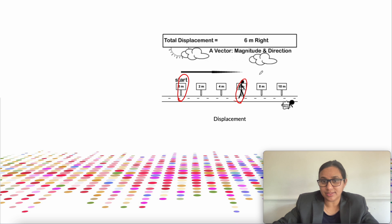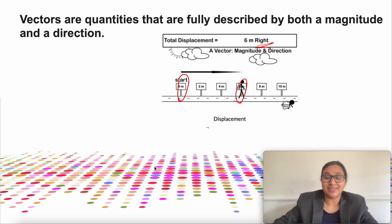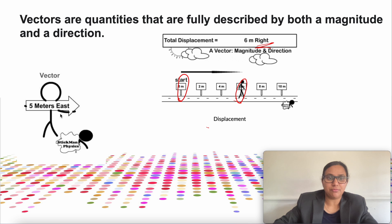But in which direction has he moved? From 0 meter to 6 meter — that is to the right. We measured the displacement as 6 meter to the right. So here 6 meter indicates the magnitude and 'right' indicates the direction. As you can see here, '5 meter east' — 5 meter is the magnitude and east describes the direction.